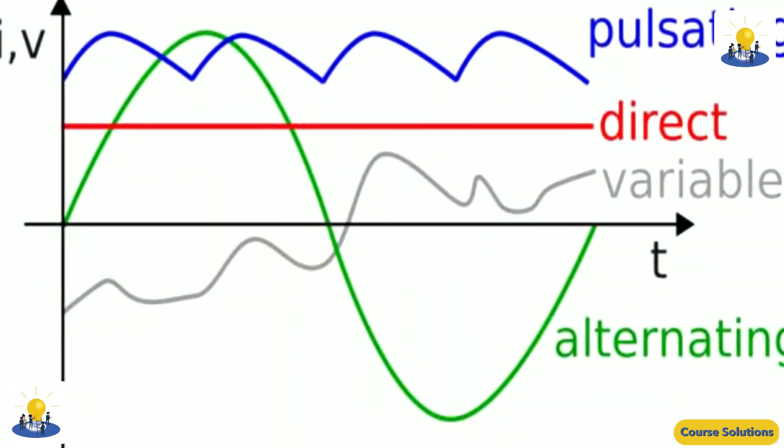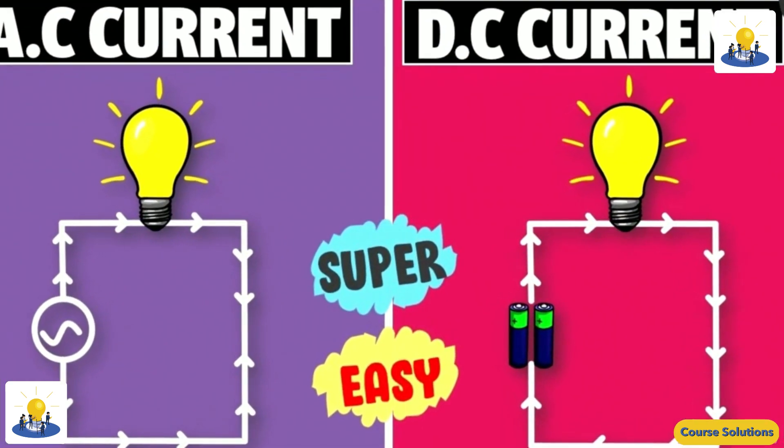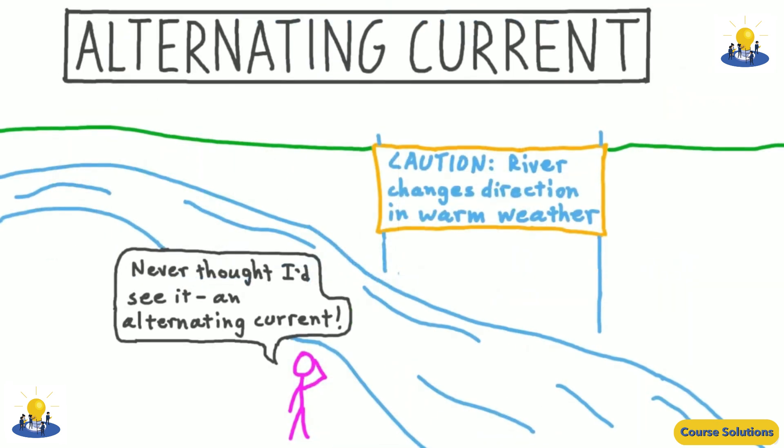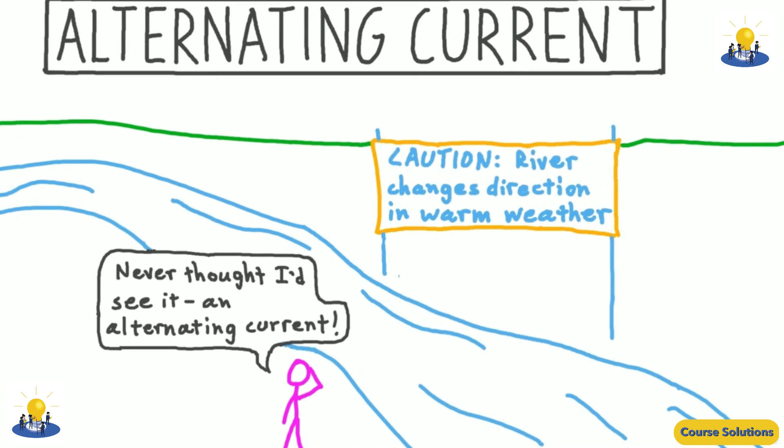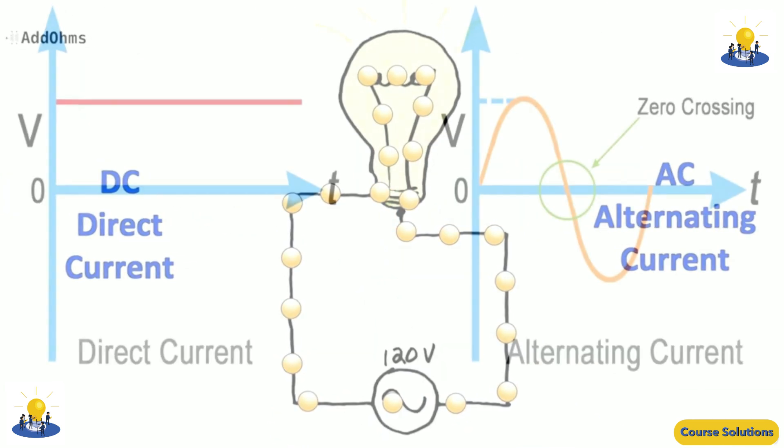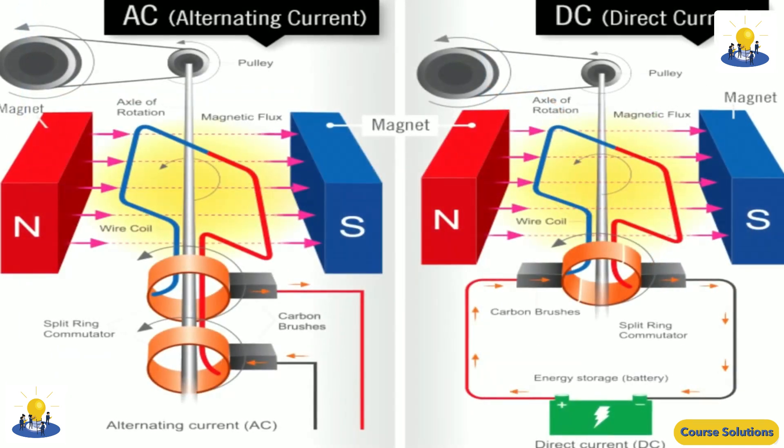The electrons in an AC circuit don't really move along with the current flow. Instead, they sort of sit and wiggle back and forth. They move one direction for 1/60th of a second, and then turn around and go the other direction for 1/60th of a second. The net effect is that they don't really go anywhere.